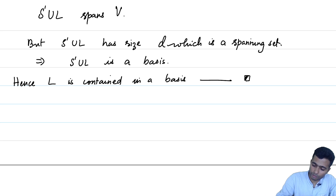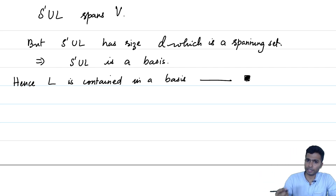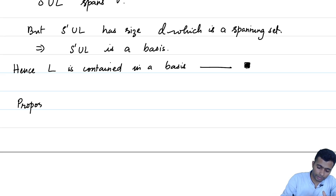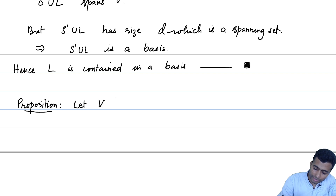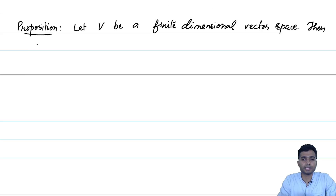So in a finite dimensional vector space, any linearly independent set must necessarily be sitting inside a basis — not necessarily a unique basis, but there is certainly at least one basis containing it. As expected, there is a dual statement: the fourth proposition says that if there is a spanning set, it should necessarily contain a basis. Let V be a finite dimensional vector space, then every spanning set contains a basis.